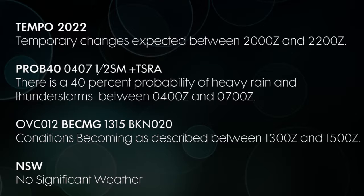In the summertime especially, you'll see a lot of probabilities. It'll say PROB 40, for example, meaning there's a 40% chance of something happening — like thunderstorms — between the hours of 4 and 7 Zulu.